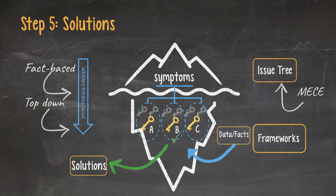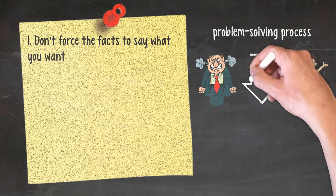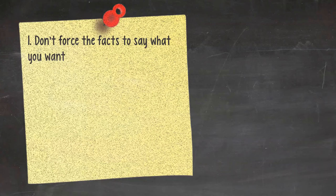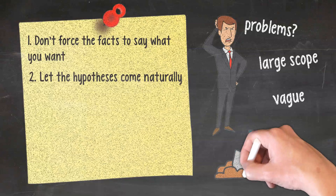A few notes when using this methodology. Number 1. Don't force the facts to say what you want. When you propose or work extensively with a running hypothesis, it's easy to get emotionally attached and turn the problem-solving process into a proving exercise. So keep an open mind and listen to what the data have to say. Number 2. Let the hypothesis come to you naturally. You will not be able to form an initial hypothesis every single time. Clients may not even know their problems. The scope of the project is often large and vague. So just dive in, gather facts, conduct analyses, and the hypothesis will show themselves naturally.